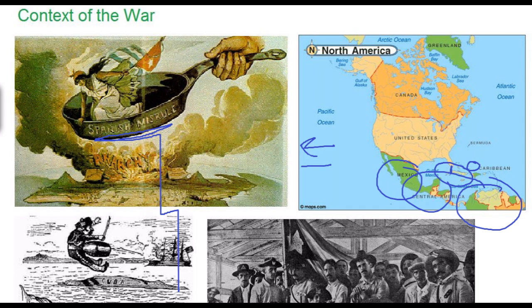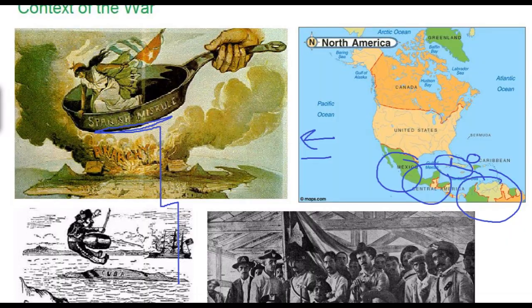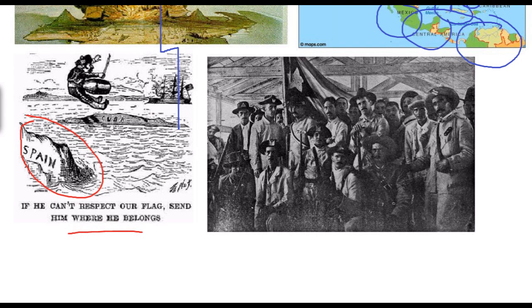The United States grew increasingly interested in doing something about this struggle. Cuban revolutionaries depicted Spain as an evil nation that didn't respect freedom, trying to get Americans to support these freedom fighters against the Spanish government. Many American journalists echoed this depiction. America's president at the time, William McKinley, attempted to mediate the conflict to satisfy both sides, but this proved fairly unsuccessful.